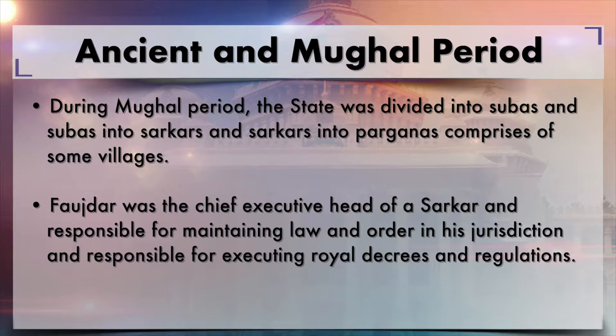During the Mughal period, the whole country was divided into Subhas, which we call provinces or states. The Subhas were further divided into Sarkars, which are equivalent to the modern-day district administrative system, although not synonymous with present district administrative systems. Sarkars were further divided into Parganas, which comprised villages or a cluster of villages.